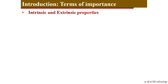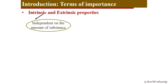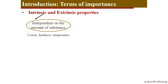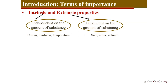Now we will see intrinsic and extrinsic properties. Intrinsic properties are independent of the amount of substance, like color and hardness, whereas extrinsic properties depend on the amount of substance, like size or mass of something.